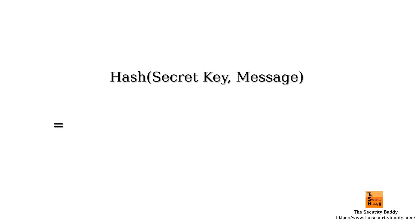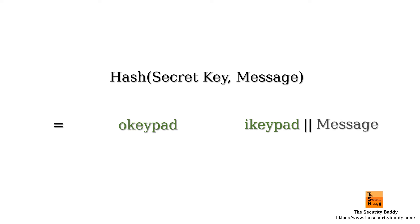The HMAC algorithm first uses the provided secret key to derive two keys. Then it concatenates the message with one of the keys to generate a message hash. The resultant value is concatenated with the other key and hashed again to generate the final hash-based message authentication code.